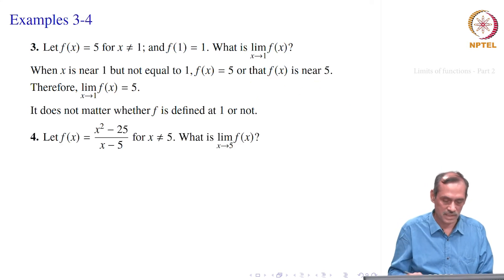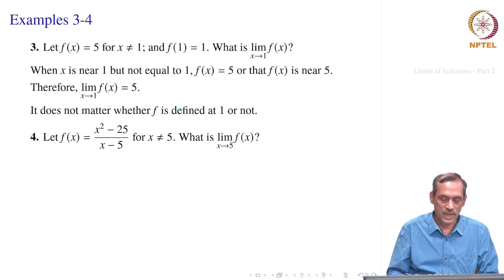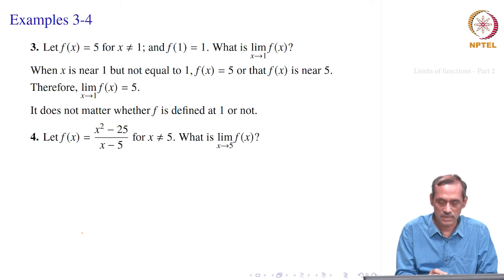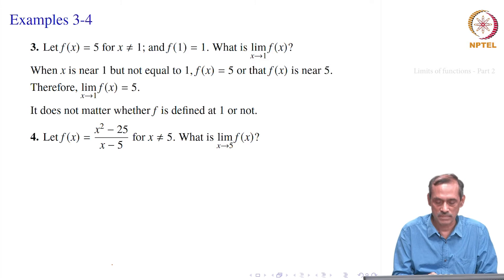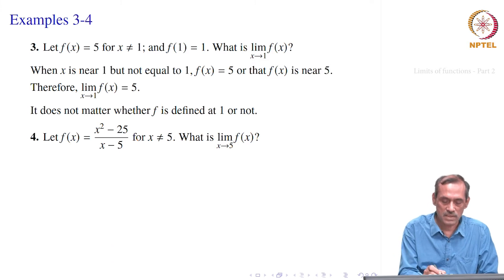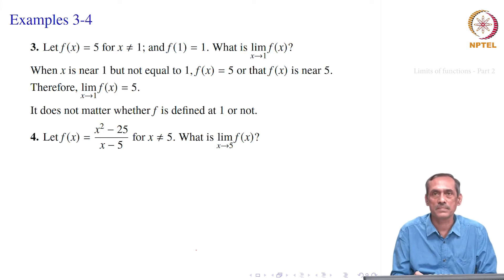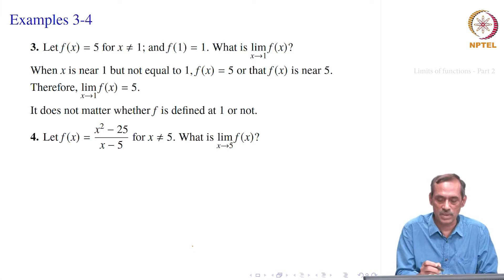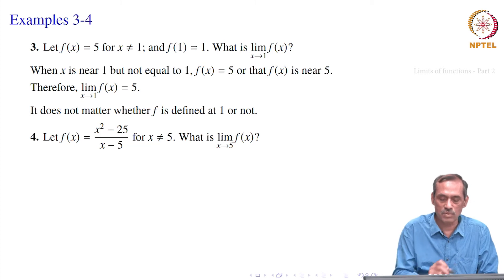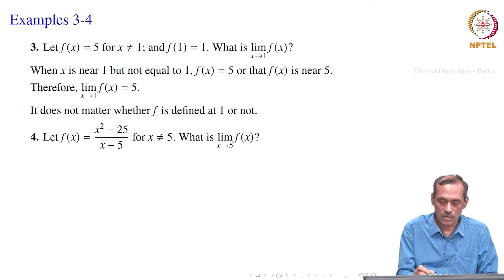Let us take the next example. Here f of x is equal to (x squared minus 25) divided by (x minus 5) for x not equal to 5, and f of x is not defined at x equal to 5. We know it does not matter for computing the limit of f(x) as x goes to 5. So what happens for this?